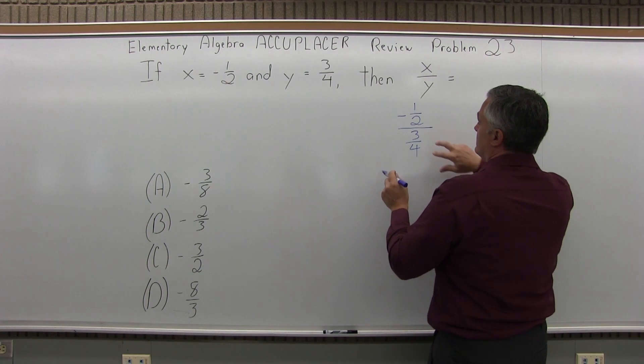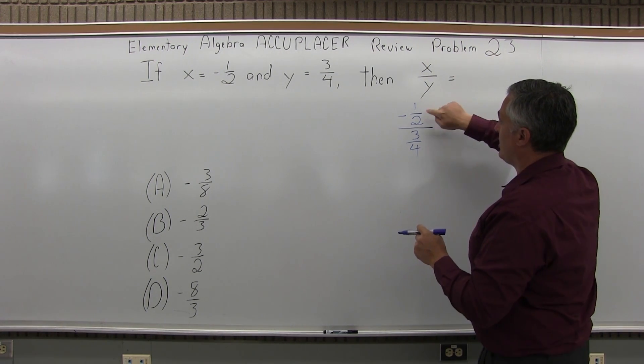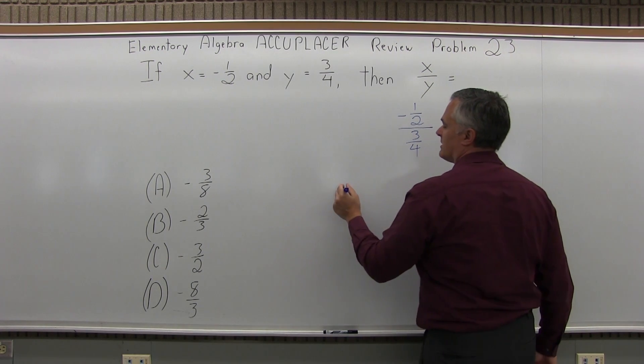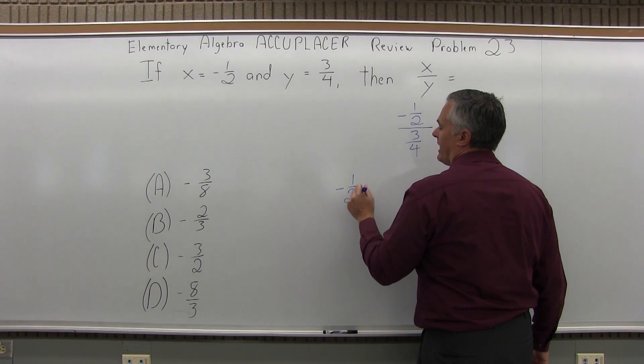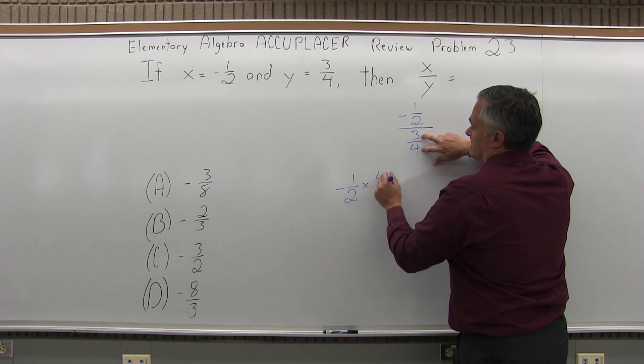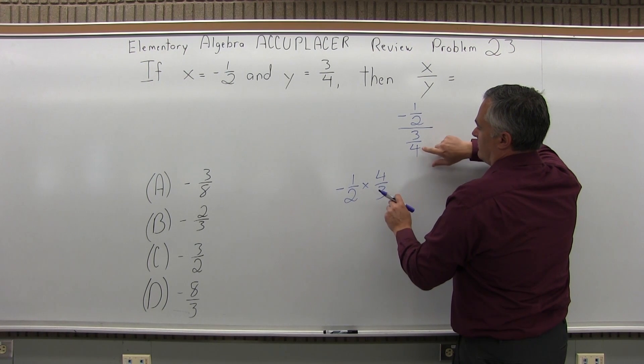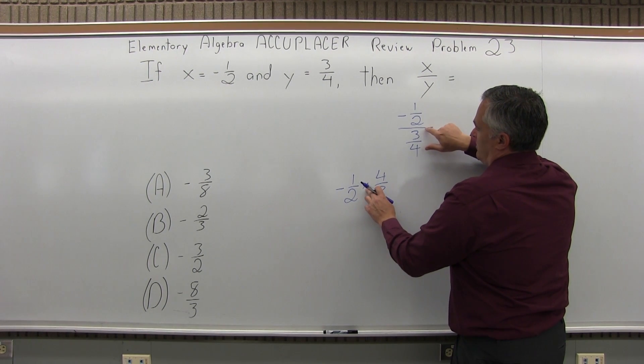So the way to handle this is take the bottom fraction, flip it or invert it, and multiply it times the top fraction. So I'm going to have negative one-half times the inverse of the bottom fraction, which is four-thirds. When it inverts or flips, this changes to a multiply.